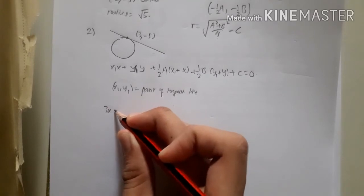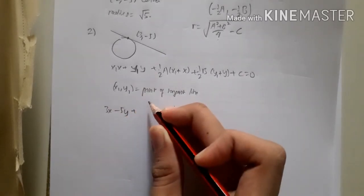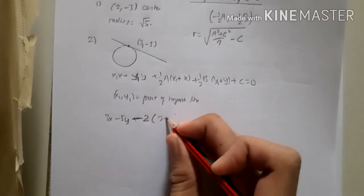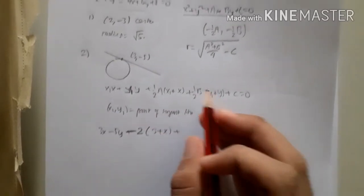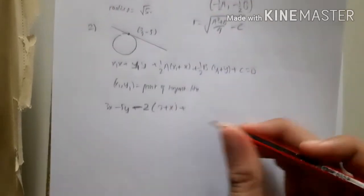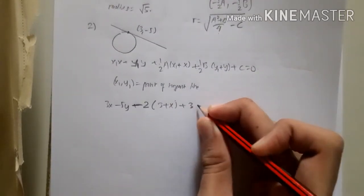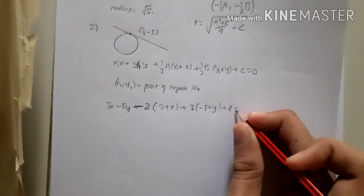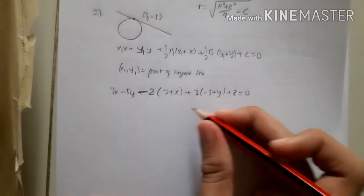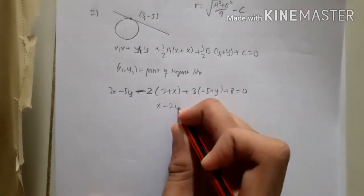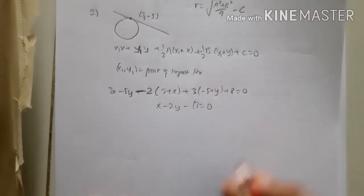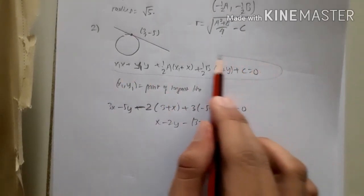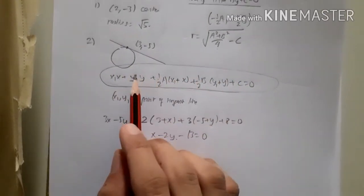Substituting in: 3x - 5y + ½(-4)(3 + x) + ½(6)(-5 + y) + 8 = 0, which simplifies to 3x - 5y - 2(3 + x) + 3(-5 + y) + 8 = 0. Opening up the equation gives x - 2y - 13 = 0. This is the equation of the tangent line at that point.